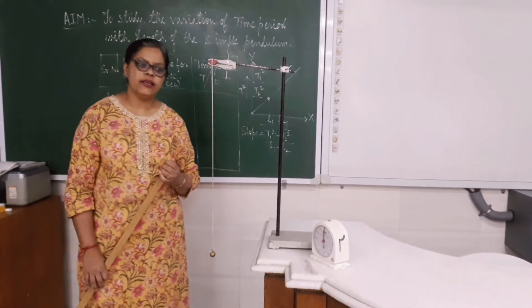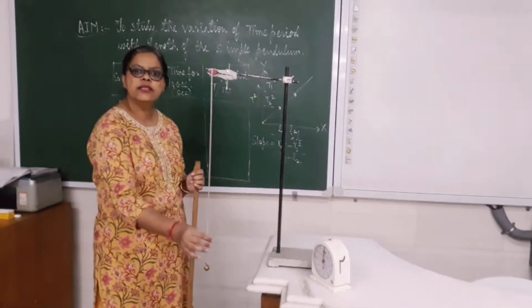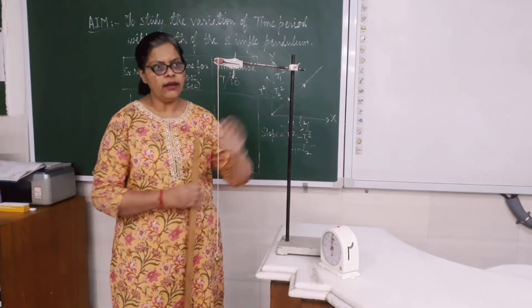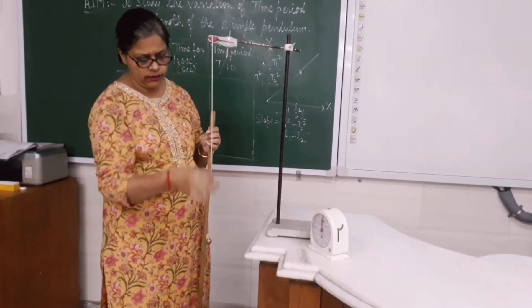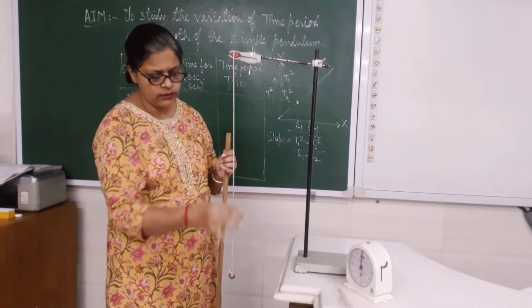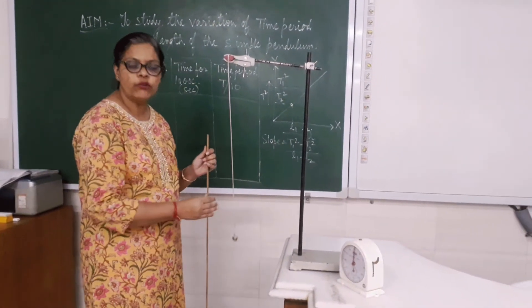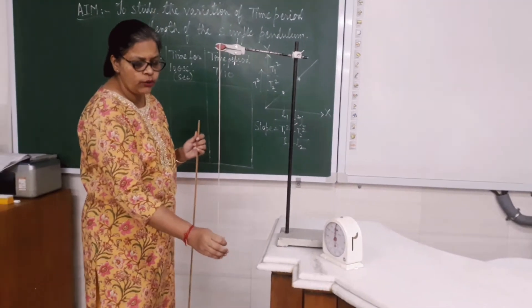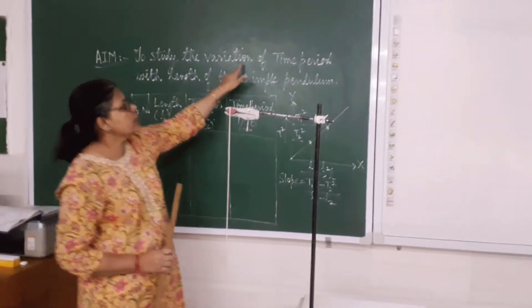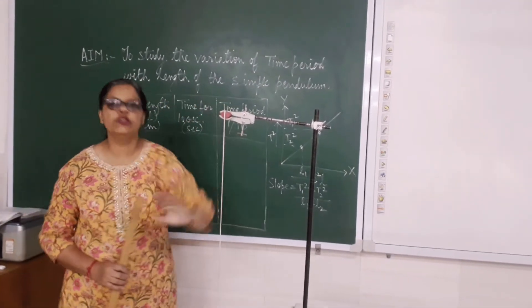Good morning children. In today's class we will be performing an experiment with the help of a simple pendulum. You can see here that I have made a setup — this is a stand, I have hung a metal bob from a support. This is a simple pendulum. When I push the simple pendulum it will show a to and fro motion. Now what am I going to prove through this experiment? I will prove the variation of time period with the length of the pendulum.